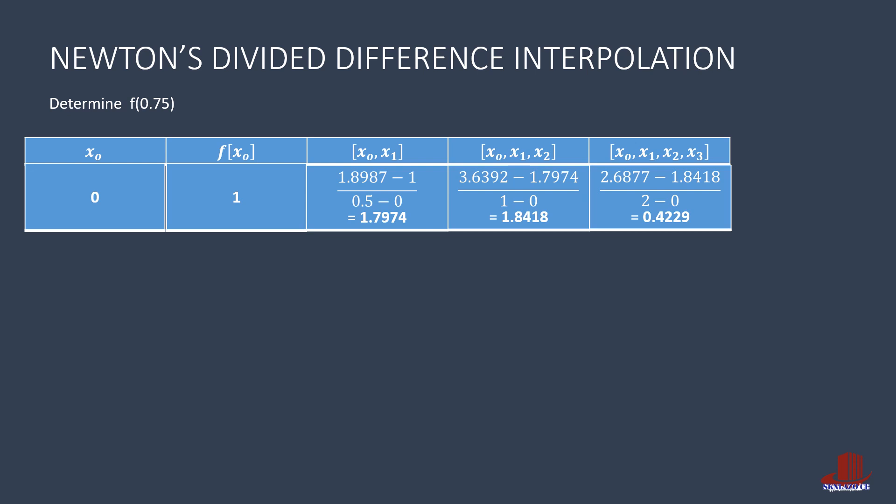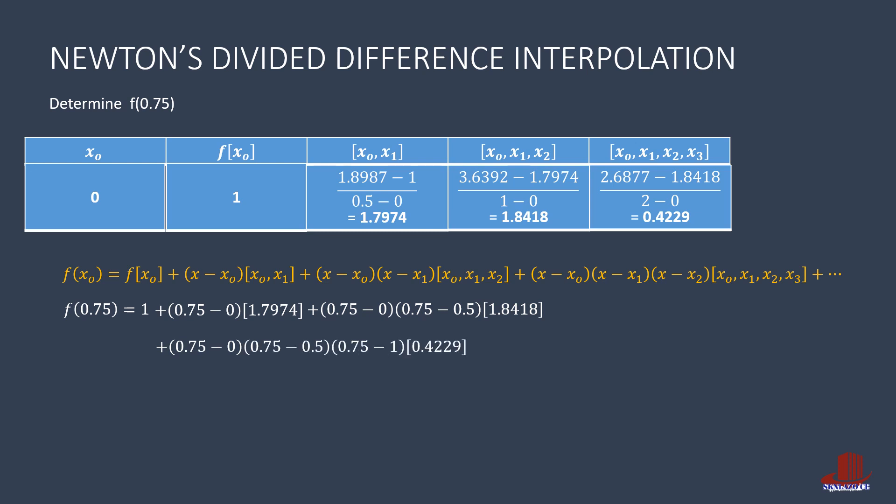With the equation for Newton's divided difference interpolation, the solution of f of 0.75 starts with 1, followed by the next term, 0.75 minus 0 times 1.7974. The following term contains 0.75 minus 0 times 0.75 minus 0.5 times 1.8418. And the last term has 0.75 minus 0 times 0.75 minus 0.5 multiplied again by 0.75 minus 1 and then multiplied by 0.4229.